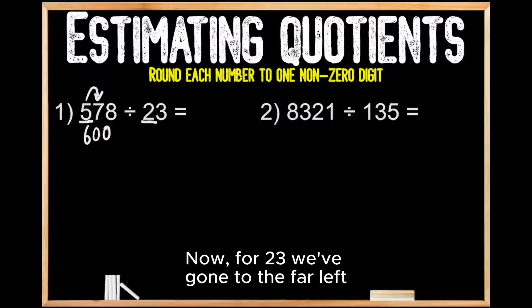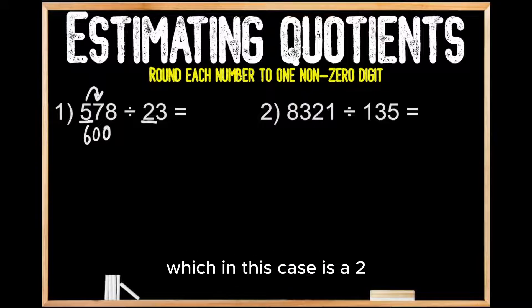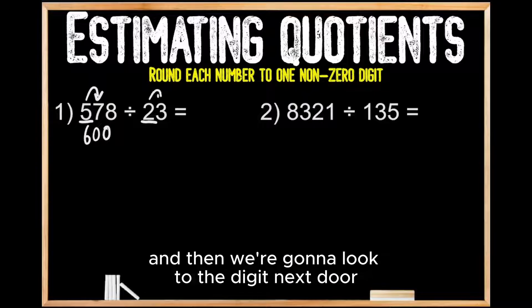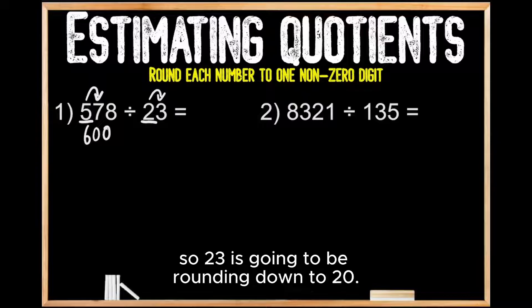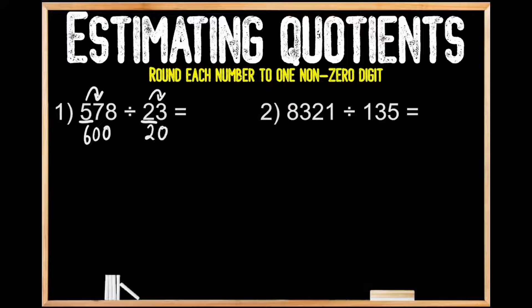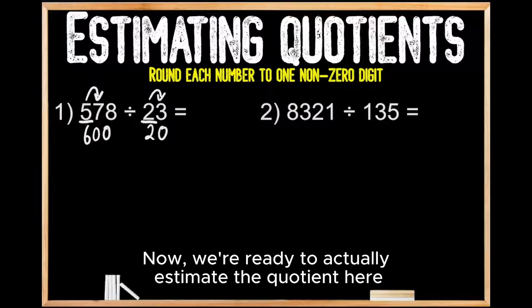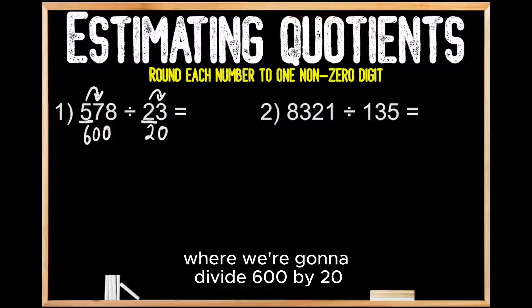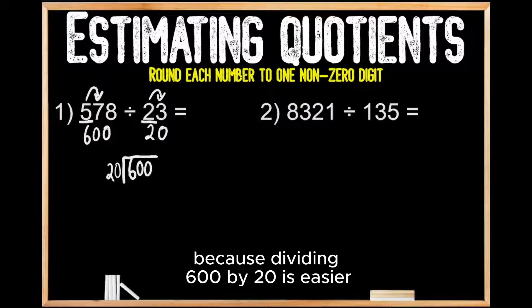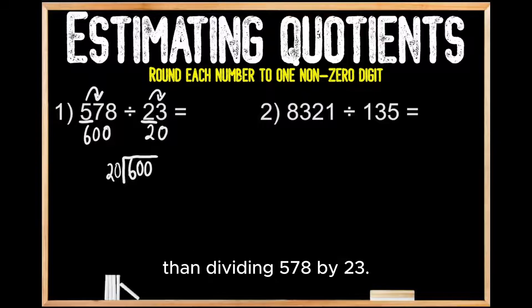Now for 23, we've gone to the far left, which in this case is a 2, and then we're going to look to the digit next door, which is a 3, so we're going to be rounding down. So 23 is going to round down to 20. Now we're ready to actually estimate the quotient, so we're going to set up this division problem where we're going to divide 600 by 20, because dividing 600 by 20 is easier than dividing 578 by 23.